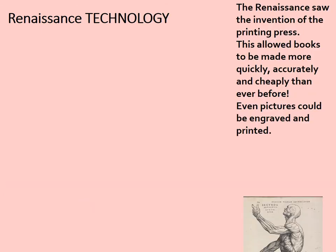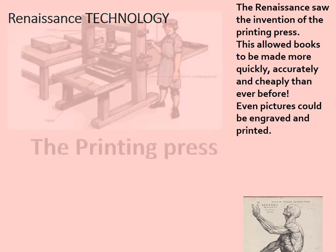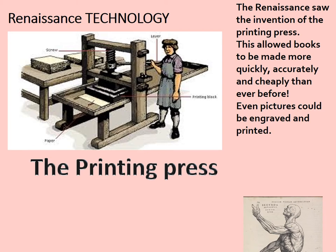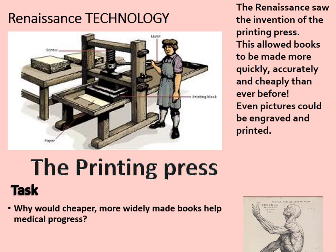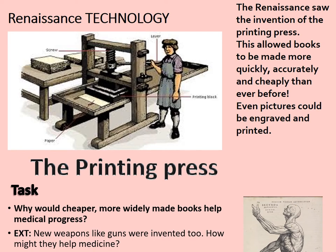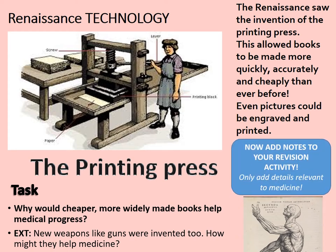Now we'll consider the role of technology. The Renaissance saw the invention of the printing press, which allowed books to be made more quickly, accurately, and more cheaply than ever before. Even pictures could be engraved and printed — like the example from Vesalius's Fabric of the Human Body. Do not underestimate the importance of the printing press in making knowledge more accurate and more accessible. New weapons like guns were also invented — consider how they might have helped medicine, possibly related to your work on Paré. Pause the video to add notes relevant to medical understanding.